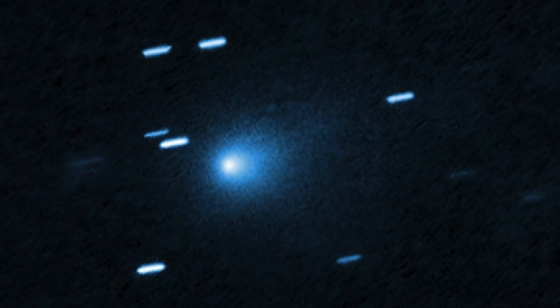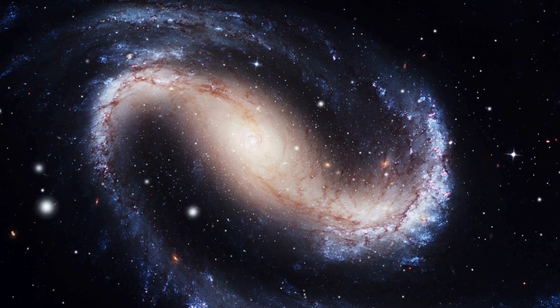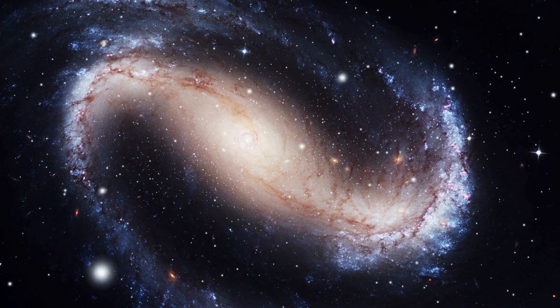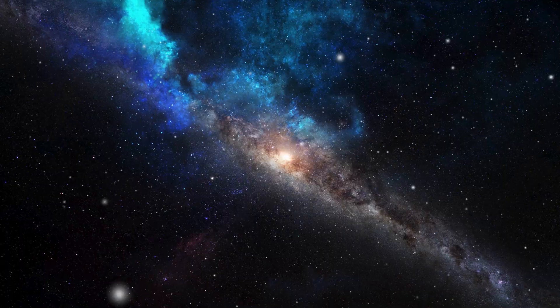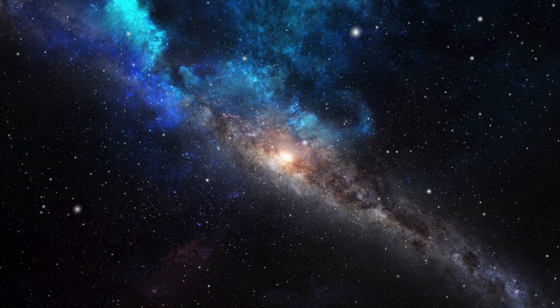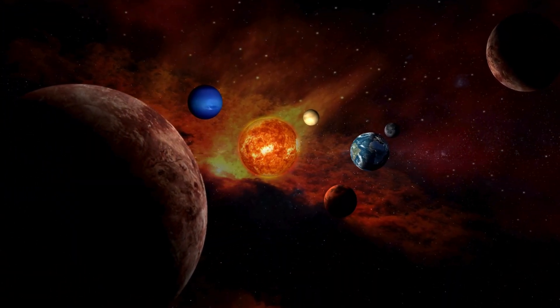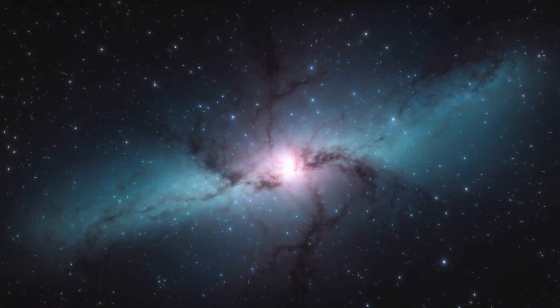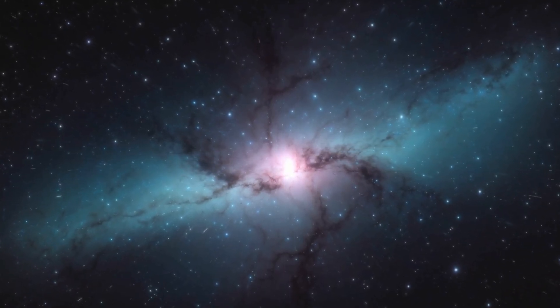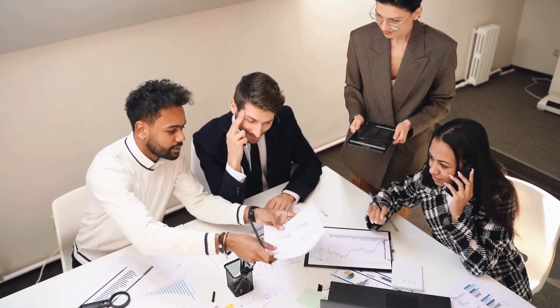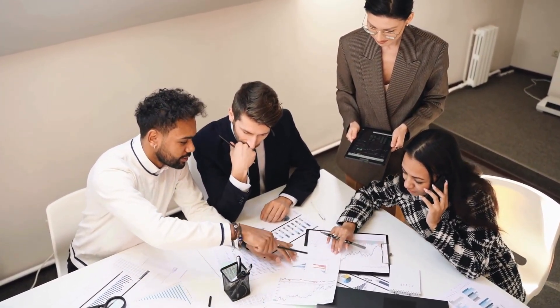So, what does 3I-Atlas mean for us? It's a time capsule from a 7.6 billion-year-old corner of the galaxy, showing us how diverse the universe is. Its size, speed, and near-perfect alignment with our solar system's plane are cosmic coincidences that spark awe and curiosity. As it exits our neighborhood, it leaves behind nearly 100 papers worth of data and countless questions.